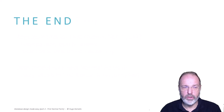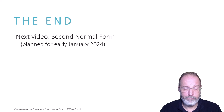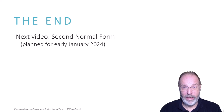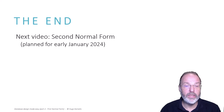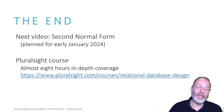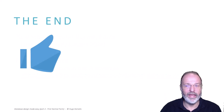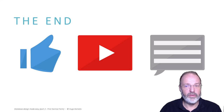That concludes the discussion of first normal form. My next video will cover second normal form — if I am fast it might release late December, but probably early January 2024 at the latest. If you cannot wait that long, or if you want more in-depth coverage including a method for finding functional dependencies, check out my course on Pluralsight — the link is also below the video. Thanks for watching. Don't forget to like, subscribe, or comment, and tune back in for the next part of Database Design Made Easy. My name is Hugo Canelis. Bye bye.